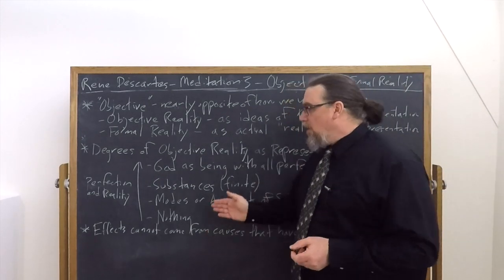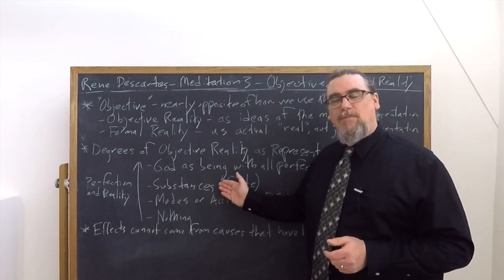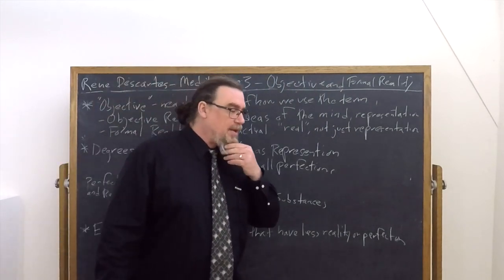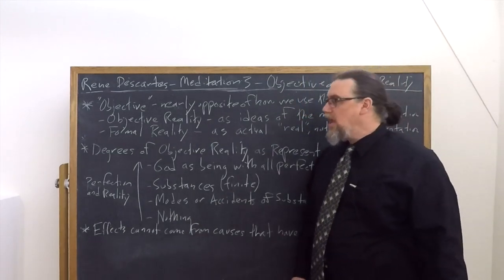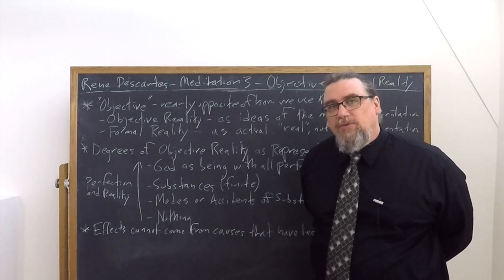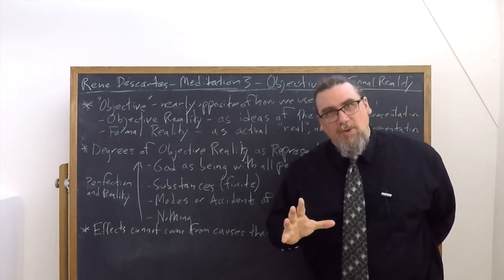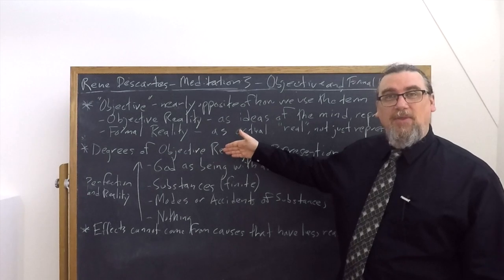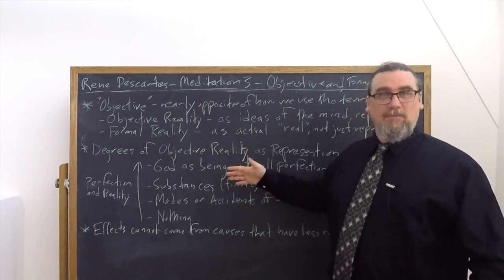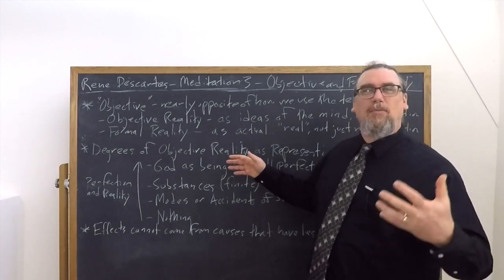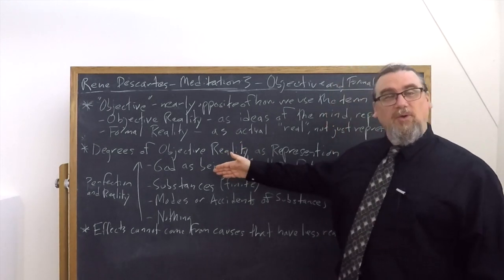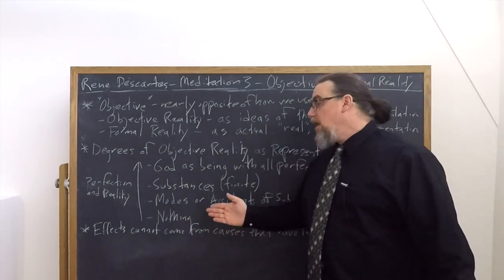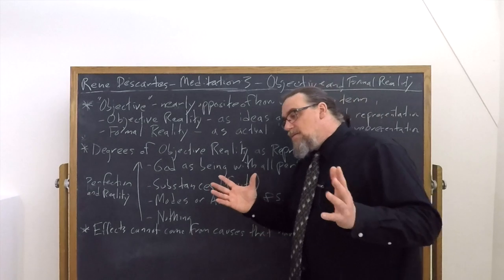And in turn, modes or accidents of substances have a greater degree of objective reality than the idea of nothing, neant, which Descartes brings up quite a few times in the meditations. So now we have this hierarchy established, and as it turns out, the hierarchy mirrors that of formal reality. Because in formal reality, really existing outside of just our minds, if there is a God, God is going to be on top of the hierarchy. And then substances, things that are real, that other things can be in or be predicated of, however we want to frame it, those are going to be less real than God, but still quite real. And then we have modes or accidents of substances, less real. And then finally, we get down to nothing, not really real at all.